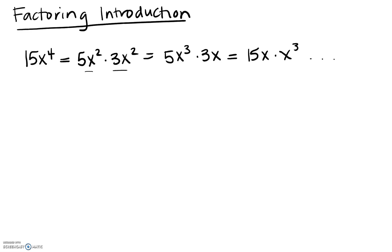There are a ton of different ways to break up 15x to the fourth. Normally we want to factor a polynomial with more than one term — factoring a monomial by itself is a bit silly. But we need that flexibility of recognizing all the different ways to write 15x to the fourth before we can factor a polynomial with more terms. So let's look at an example: we'll use 15x to the fourth plus 25x squared.